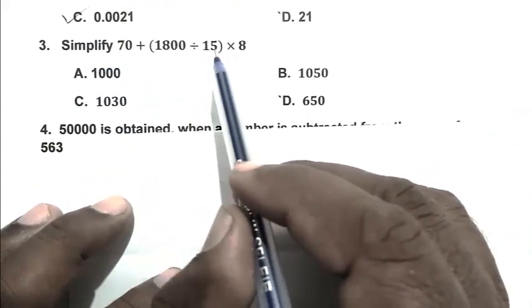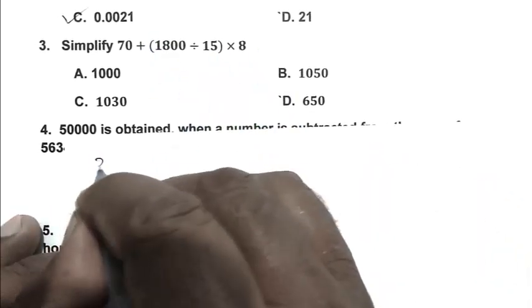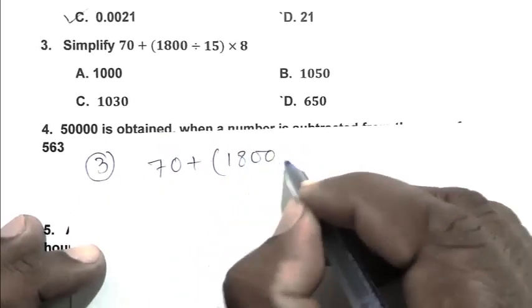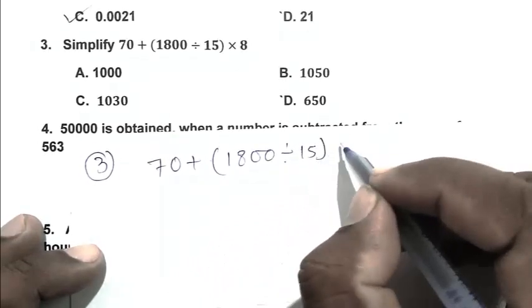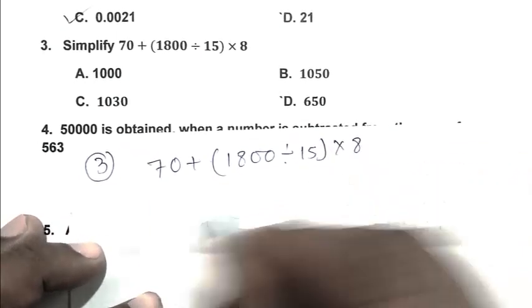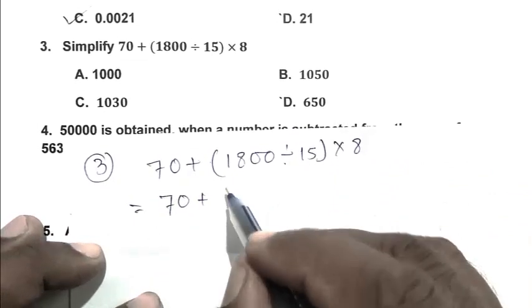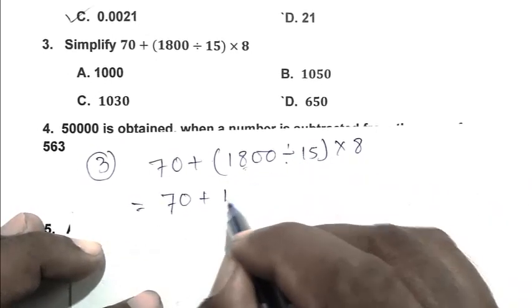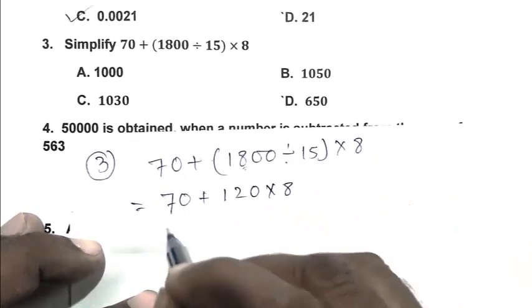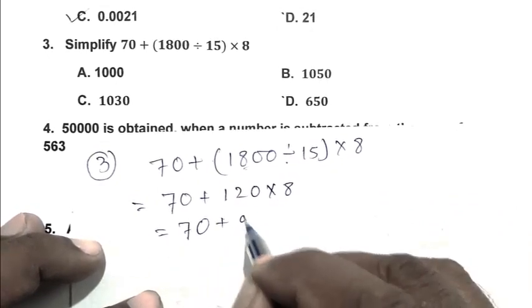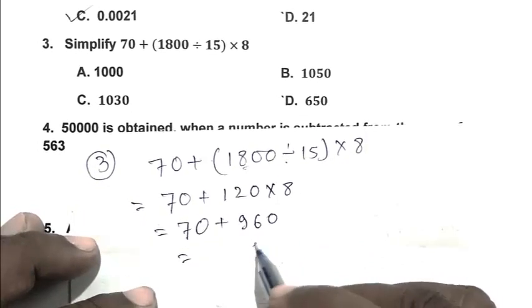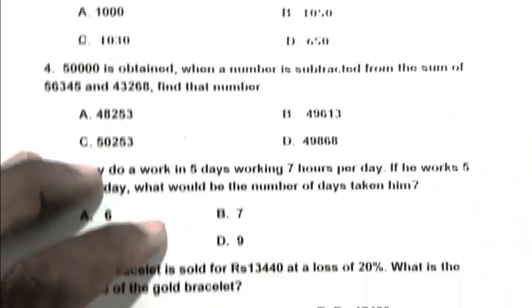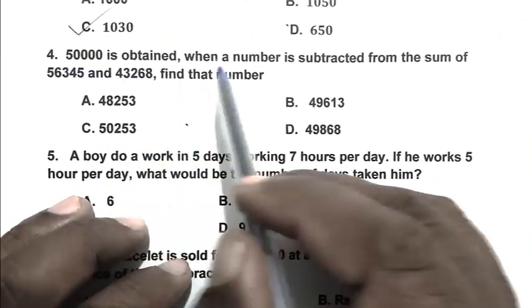Question number three: simplify 70 plus 1800 divided by 15, in bracket, multiplied by 8. According to BODMAS rule, we calculate the bracket first: 1800 divided by 15 equals 120. Then 120 multiplied by 8 equals 960. So 70 plus 960 equals 1030. C is the right answer.